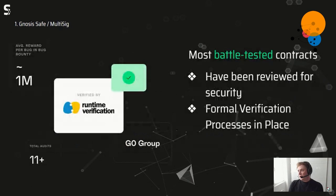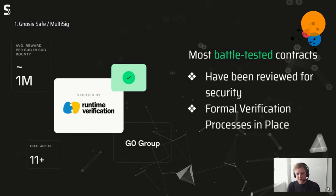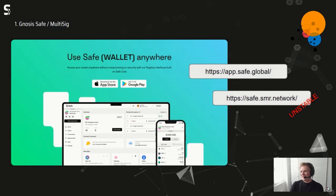The whole thing builds on smart contracts, and Gnosis says these are the most battle-tested contracts because they've been reviewed nearly a hundred times. Many separate projects reviewed them, Gnosis also reviewed them internally, and they did several audits. They also have a formal verification process in place. All of this leads to a bug bounty reward of around one million dollars — find a bug and you can get rich.